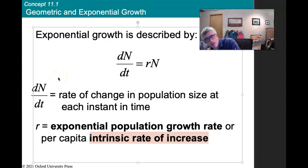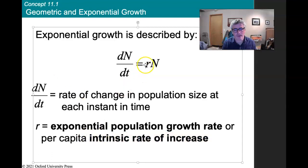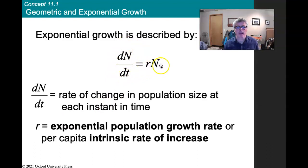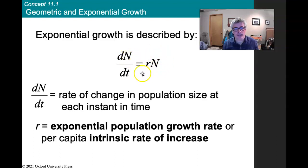The best way to think about r is as the instantaneous birth rate minus the instantaneous death rate — meaning it's the change in population for a given time. It's not the end result N_{t+1}; it's the instantaneous rate of change.